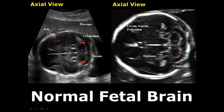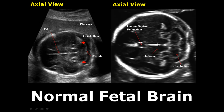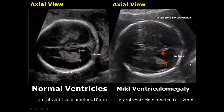In the posterior fossa, this bilobed structure is the cerebellum, and it is covered by the cerebellar vermis. At a slightly different level, this is the cavum septum pellucidum — an anechoic rectangular structure in front of the thalami. These hypoechoic structures are the thalami on either side of the falx cerebri, in front of the cerebellum.